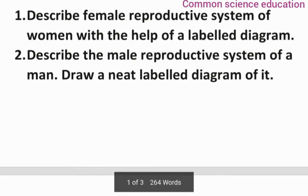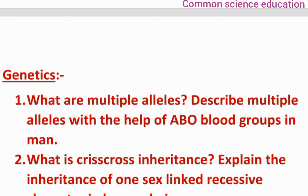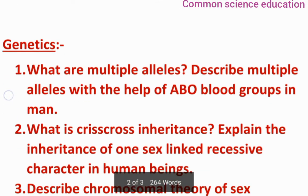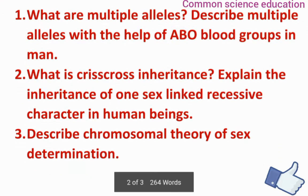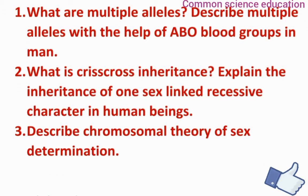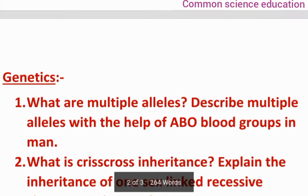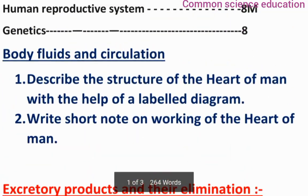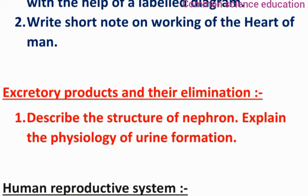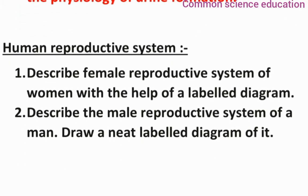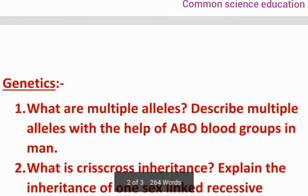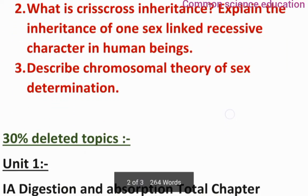Next lesson is Genetics. The important questions are: 'What are multiple alleles? Describe multiple alleles with the help of ABO blood groups in man,' 'What is criss-cross inheritance? Explain the inheritance of one sex-linked recessive character in human beings,' and 'Describe the chromosomal theory of sex determination.' So across the 3 lessons — Body Fluids and Circulation, Excretory Products, Human Reproductive System, and Genetics — one question from each is compulsory.